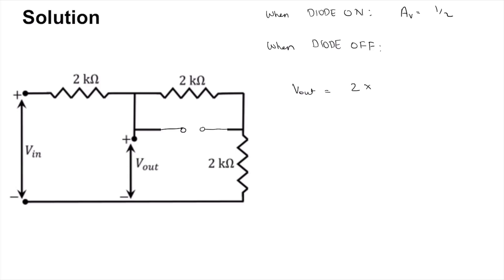2 times 2k by 3 times 2k into Vin, which is 2 by 3 Vin, and so dVout by dVin is 2 by 3.